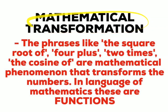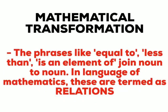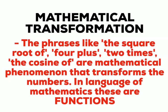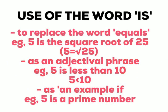Next is mathematical transformation. Phrases like 'the square root of,' '4 plus,' and 'two times the cosine of' are mathematical transformations. These transform numbers in some way. In the language of mathematics, these are called functions - 'the square root of,' 'two times,' and 'cosine of' are all functions performing operations.